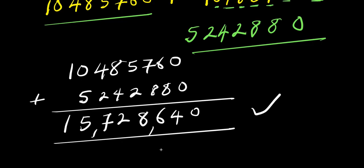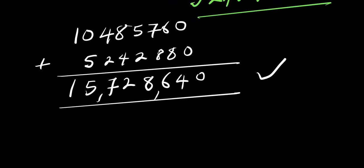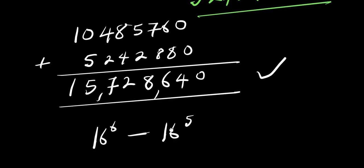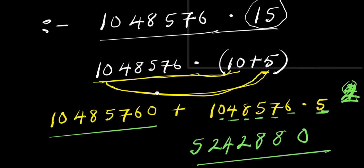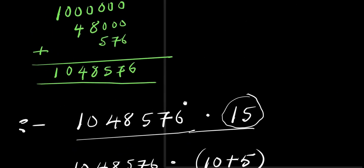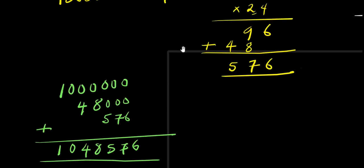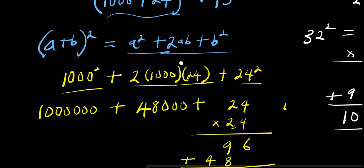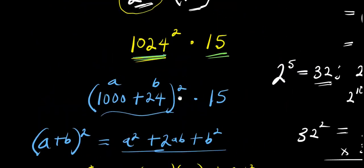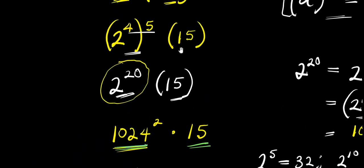So, that is it for 16 to the power of 6 minus 16 to the power of 5. We have 15,728,640. And we have achieved this without the use of a calculator. Please don't forget to subscribe and share this video with your friends. Thank you and see you again.